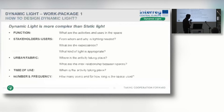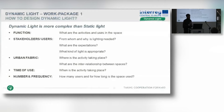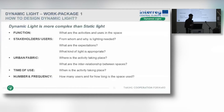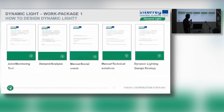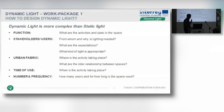Working with the students, we realized that dynamic light is more complex than static light. As Professor Rommel also pointed out, we need to understand what activities are taking place, who the users are, what their expectations are, the urban fabric, scales, proportions, time of use, number and frequency, and so on. Only after understanding all of this can we create a good dynamic lighting proposal.